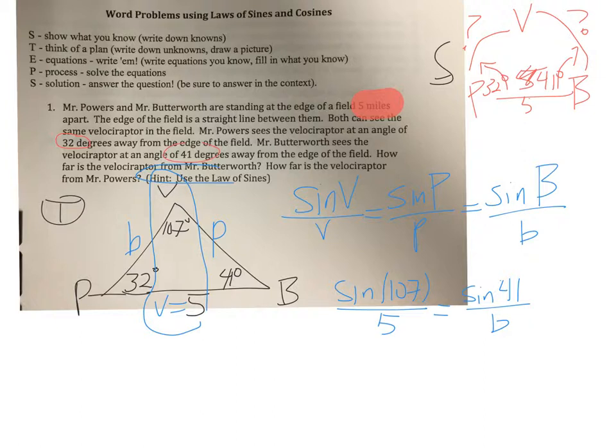Doing some of the calculation. Sine of 107. Sine is going to be 0.95. Now I'll carry an extra decimal place or two into that. So 0.9563 over 5 is equal to sine of 41. And that's going to be 0.6561 over B.